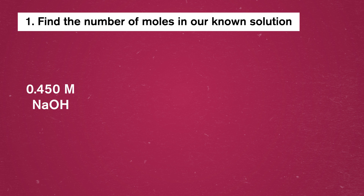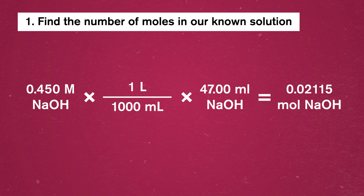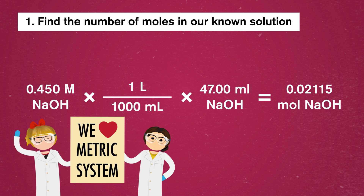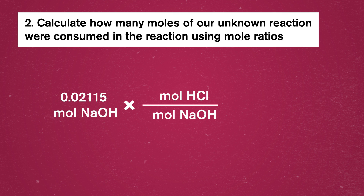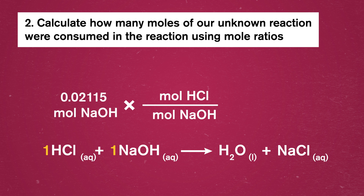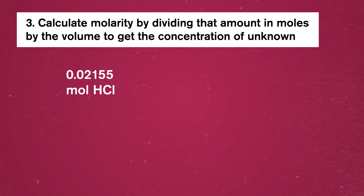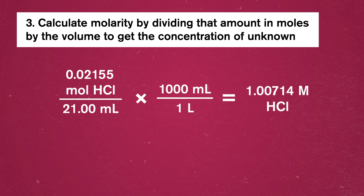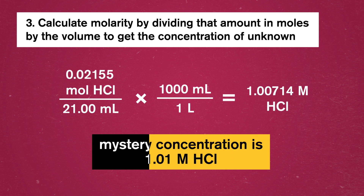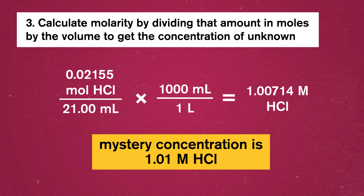To get to our mystery concentration, we'll perform three steps. First, we take our molarity of sodium hydroxide at 0.450 moles per liter and multiply by its titration volume to end up with moles. Since our volumes are in milliliters, we'll need to convert to liters along the way. Step 2 is converting moles of sodium hydroxide to moles of hydrochloric acid with a mole ratio. In this case, our ratio is 1 to 1, so we end up with 0.0215 moles of hydrochloric acid consumed in the reaction. Our last step is to take that amount of moles and divide it by our given starting volume of hydrochloric acid to get our molarity — we'll need to convert from milliliters to liters here too. Thanks to our titration and a little bit of math, we now know that our mystery concentration is 1.01 molar hydrochloric acid.